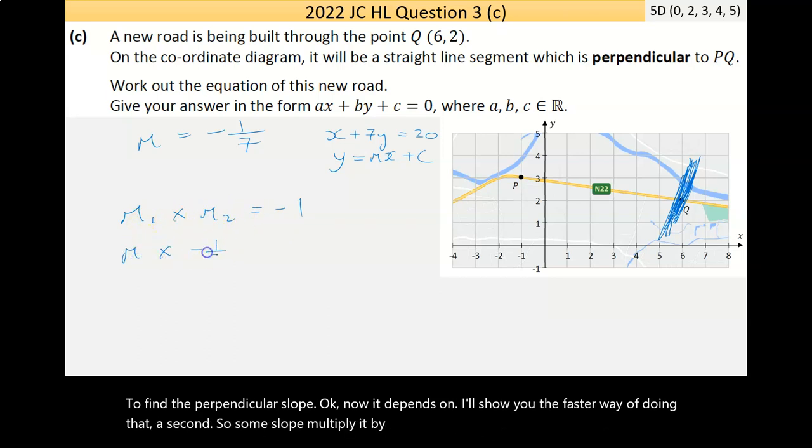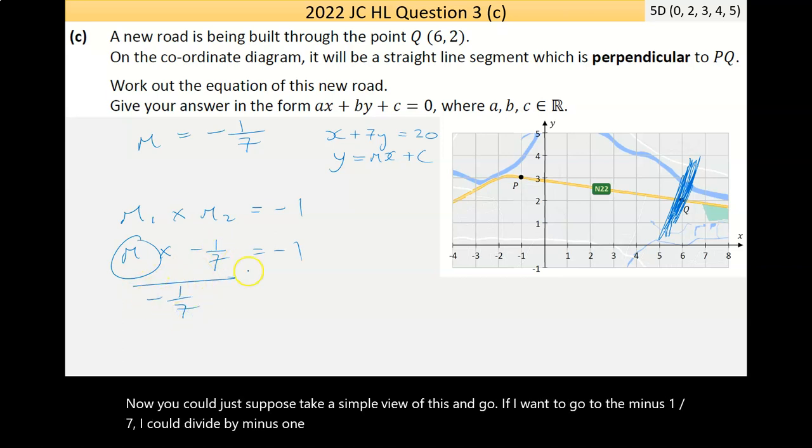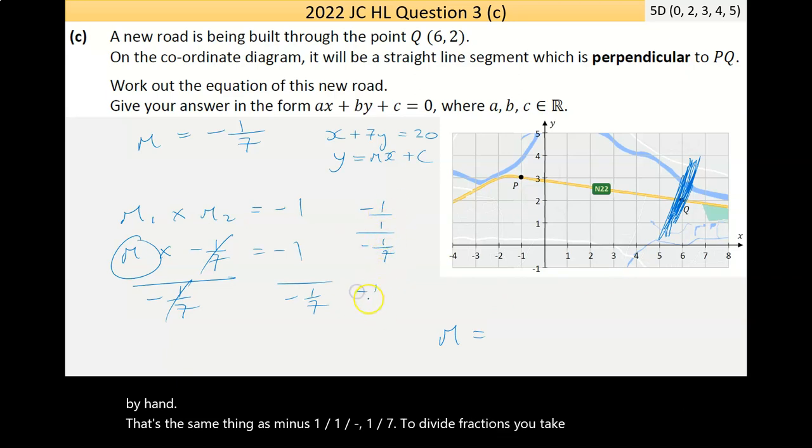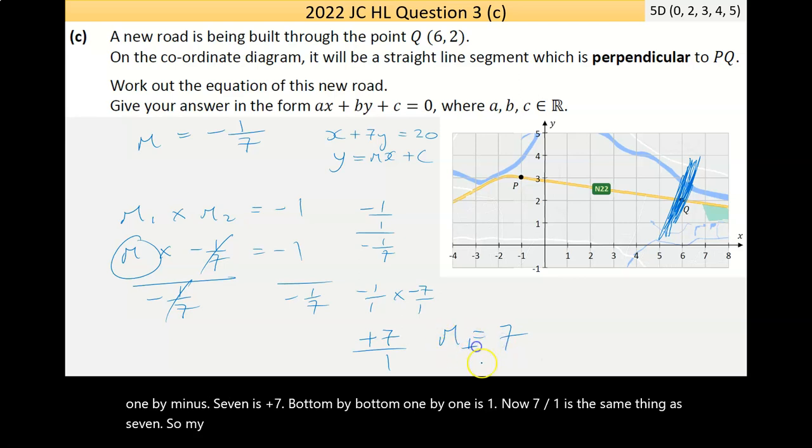Once you have the slope, you can use this formula to find the perpendicular slope. Some slope multiplied by negative 1 over 7 is equal to minus 1. If I want to get rid of minus 1 over 7, I divide by minus 1 over 7. Do it to one side, I have to do it to both. You're left with m equals plus 7.